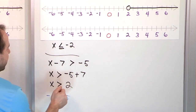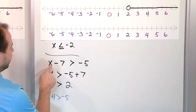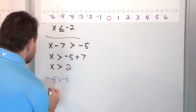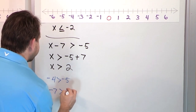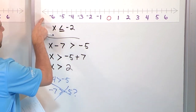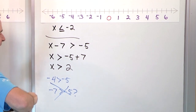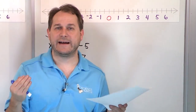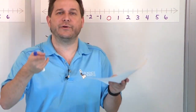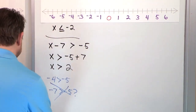What happens when you put the number 0 in, which is not greater than 2? 0 minus 7 is negative 7. Is negative 7 greater than negative 5? No, it's not — negative 7 is over here, that's definitely not bigger than negative 5. So when you solve the inequality down to the end, you're getting a range of values, and those are the values that work when you put them back into the original inequality.